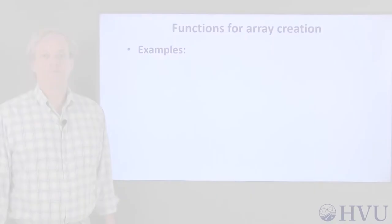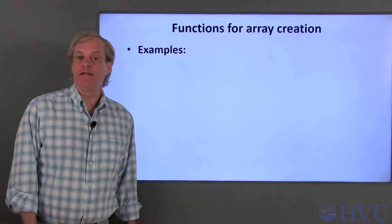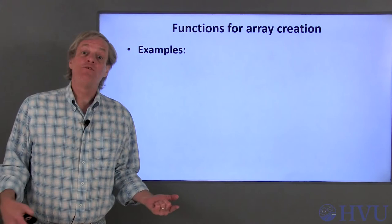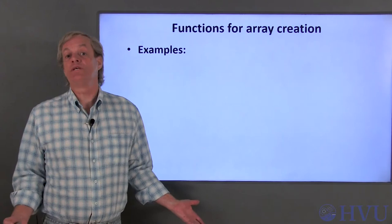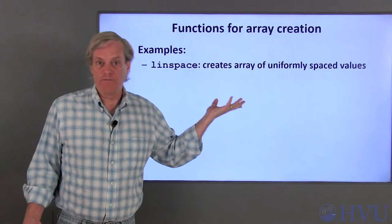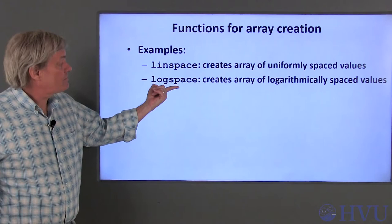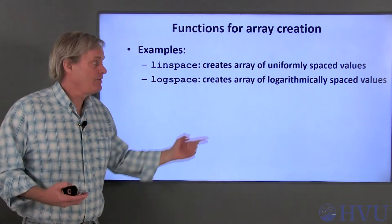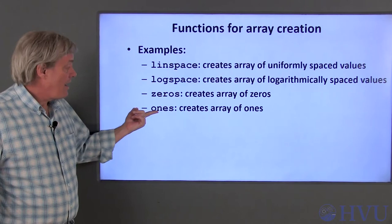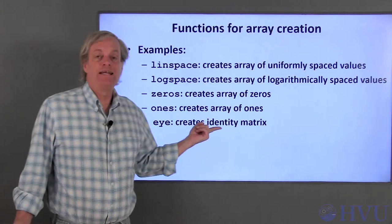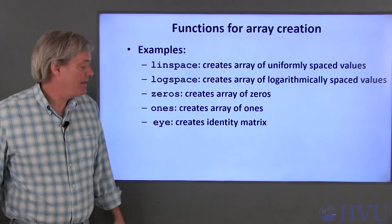There are a variety of functions which create arrays. If you know the function name, it's easy to find the appropriate syntax using Octave's help files. The LINSPACE command creates an array of uniformly spaced values. The LOGSPACE command creates an array of logarithmically spaced values. The ZEROS command creates an array of zeros, and the ONES command creates an array of ones. The EYE command creates an identity matrix with 1s on the main diagonal and 0s everywhere else. RAND and RANDN create arrays of random numbers.